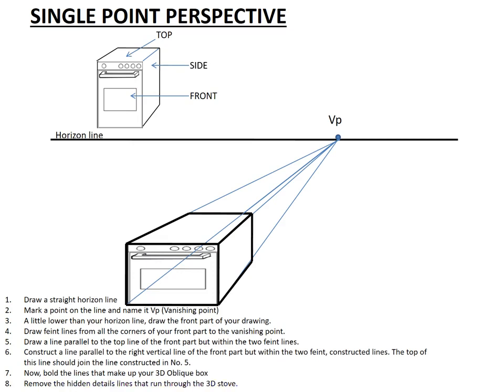It brings us to our last point, which says remove the hidden detail line that runs through the 3D stove. There is a line that runs through the stove. We must remove it. Let's now remove it. There we go. Now, the 3D drawing resembles our oblique drawing exactly as it appears there as our reference drawing.